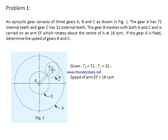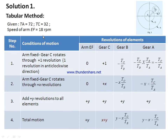This is the problem: as shown in the figure, an epicyclic gear train consists of three gears A, B, and C. Gear A has 72 internal teeth, gear C has 32 external teeth, and gear B meshes with both A and C and is carried on an arm which rotates about the center of A at 18 rpm. If gear A is fixed, determine the speed of gears B and C.